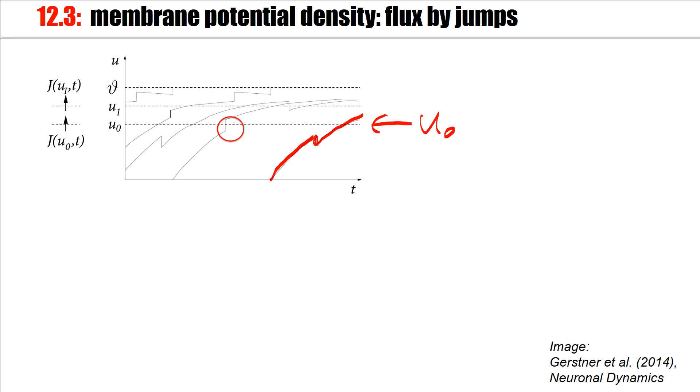There are two types of flux. One is caused by the continuous movement of a trajectory, here driven by external drive, external current. And the other one is due to an excitatory spike arrival. So let's look at these two components separately.